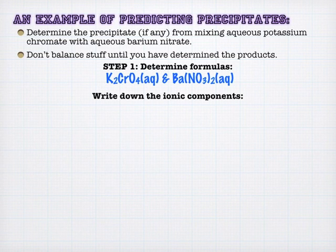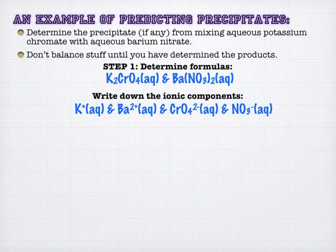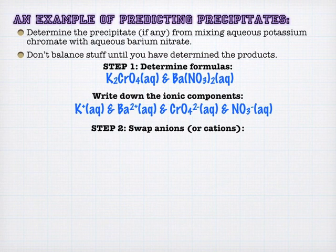Step 2, write down the ionic components. And you can certainly write down your ion pool first and then name your compounds. It doesn't really matter what order you do this stuff in. But you've got potassium ion, the barium ion, chromate, and nitrate ions. Again, we're not worried about balancing any of this stuff out. And so potassium came to the dance with chromate. Barium came to the dance with nitrate. But they're going to get an opportunity to swap partners.